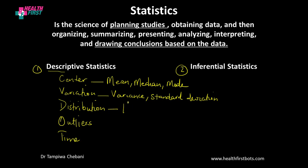For distribution, we employ a histogram to visualize the distribution of the data. For outliers — outliers simply means extreme values — those values can be extremely small or extremely large, such that they skew our distribution to one side or the other.